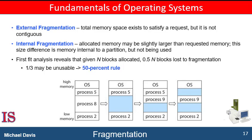Both first fit and best fit strategies for memory allocation suffer from what is referred to as external fragmentation. As processes are loaded and removed from memory, the free memory space is broken into little pieces. External fragmentation exists when there is enough total space to satisfy a request, but the available spaces are not contiguous — storage is fragmented into many small blocks. This fragmentation problem can be severe; in the worst case, we could have a block of free memory available between two processes.